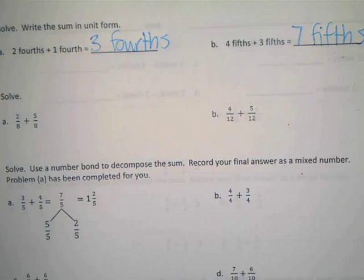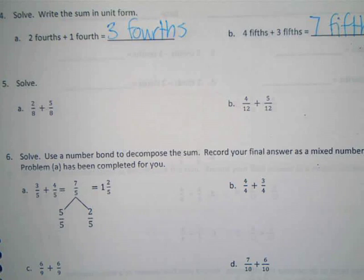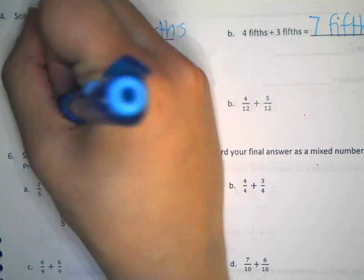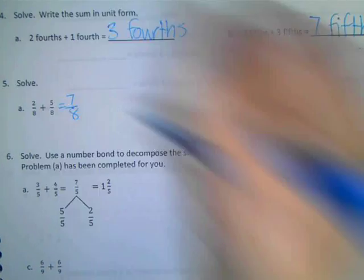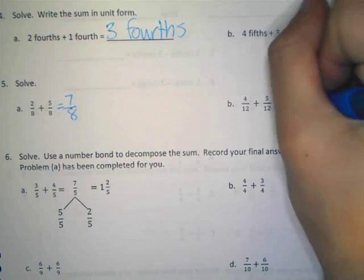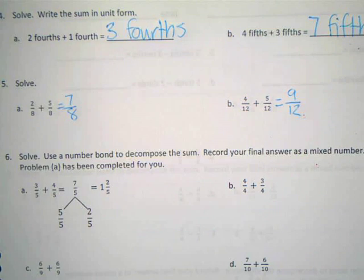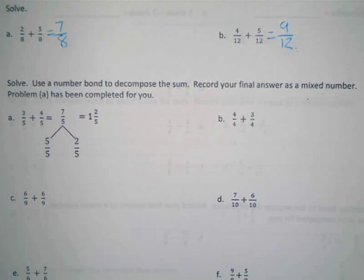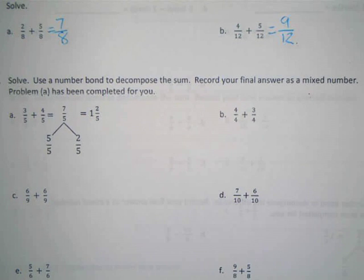Four-fifths plus three-fifths. Seven-fifths. Were the other ones subtraction that we did? Yeah. Okay. So now it's just the same idea on this page, but adding. Adding. Yeah. All right. Solve. Two-eighths plus five-eighths. Seven-eighths. Four-twelfths plus five-twelfths. Nine-twelfths.